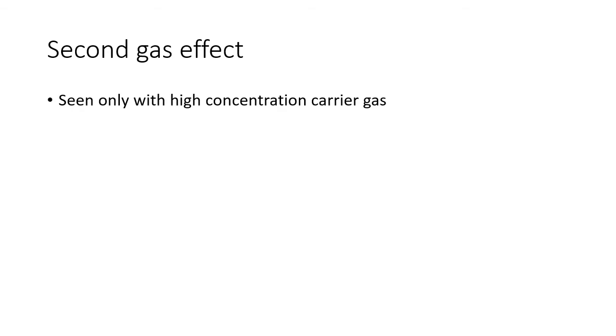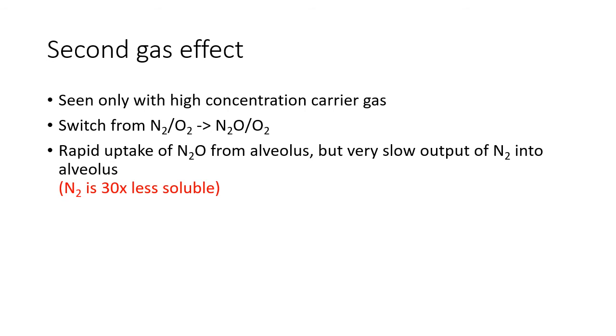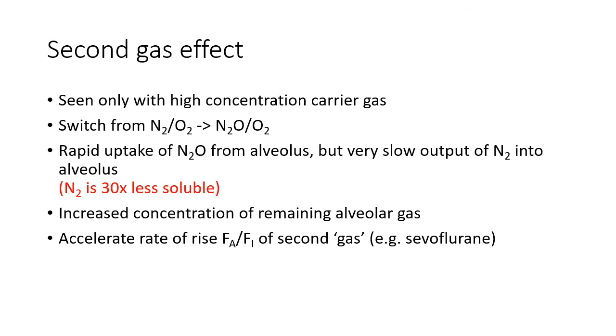The second gas effect is likewise only seen with the use of high concentration carrier gas, like nitrous oxide. Once again, at the beginning of the case, we switch from a nitrogen-oxygen mixture to a nitrous oxide and oxygen mixture. There is rapid uptake of nitrous oxide from the alveolus, but only very slow output of nitrogen into the alveolus, again because of the discrepancy in their solubilities. This results in increased concentration of the remaining alveolar gas, and the effect of this is to accelerate the rate of rise of FA over Fi of the second gas, such as sevoflurane.